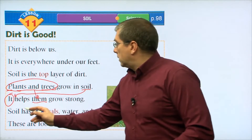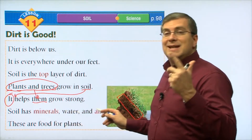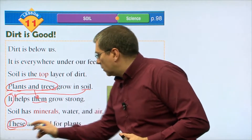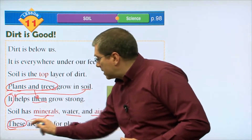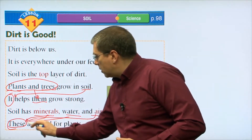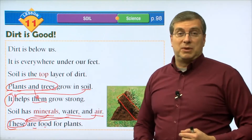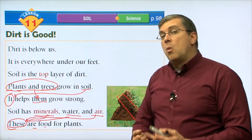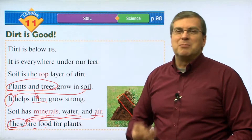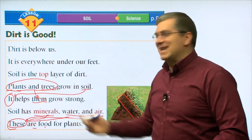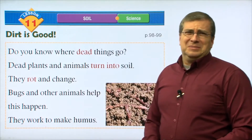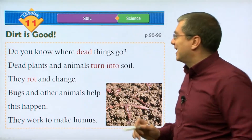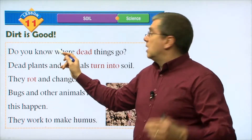Now we're going to take a short break and move on to the reading. Welcome back, everybody. We've learned a lot of vocabulary this lesson. Let's take a look at the reading passage and remember the vocabulary we just learned. The first sentence is: dirt is below us. Dirt and soil are similar — they're almost the same thing. Where can we find dirt? It's below us, under our feet — everywhere, even in the city. It's under the street, under your apartment building. Dirt is everywhere below us.